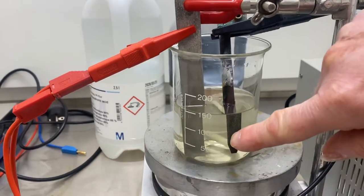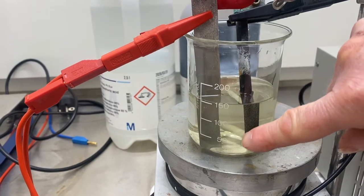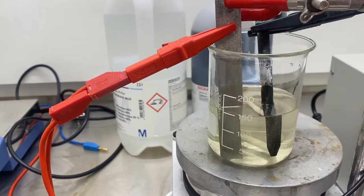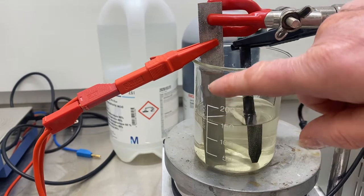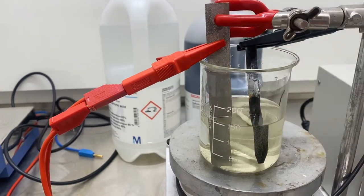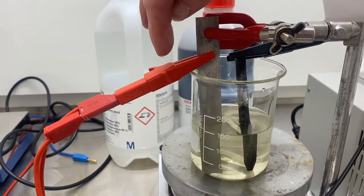In the beaker here we have the sulfuric acid phosphoric acid mix up to 150 ml. On the left hand side we have the piece of stainless steel connected to the red terminal of the power supply, which is the anode.